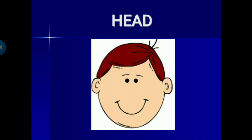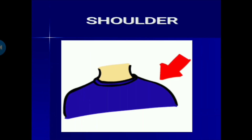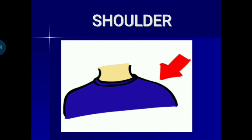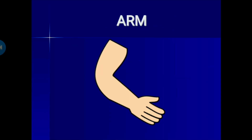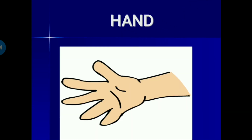Head. This is my head. Neck. This is my neck. Shoulder. This is my shoulder. Arm. I have an arm. Elbow. Here is my elbow. Hand.